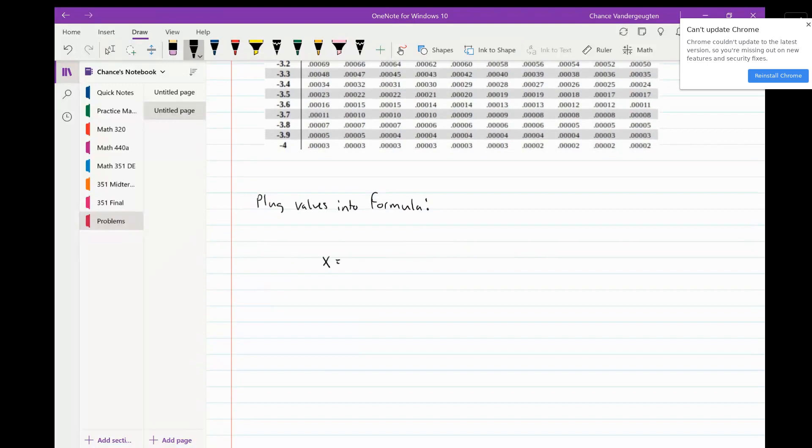We should get our answer. So we have x equals mu plus z times the standard deviation. That's x equals 227.2 plus negative 0.84 times 82.3.